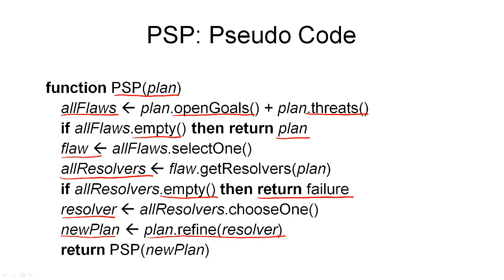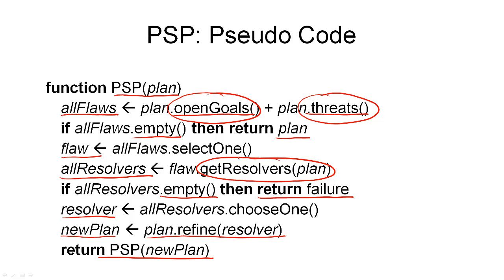This is the step that generates a new search node in our search space. I haven't defined the search procedure as an iterative procedure, but as a recursive procedure, where the recursive call comes here. So we've generated a new node, and we simply apply the PSP procedure to that new node. Now, there are a few things to say about this algorithm. It contains a number of functions that I still have to define — for example, how to compute the open goals in a plan, or how to find the threats that exist in a given plan. Also, I need to be able to compute the resolvers that are available for a given flaw in the plan, and I need to define how I can apply these resolvers to a current plan. These are implementation details that I will look at in the next section.